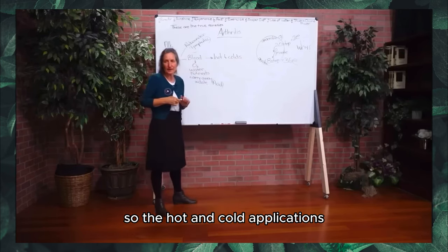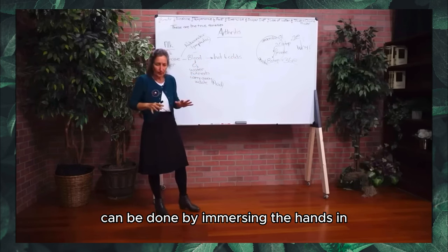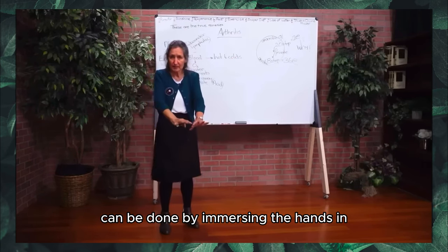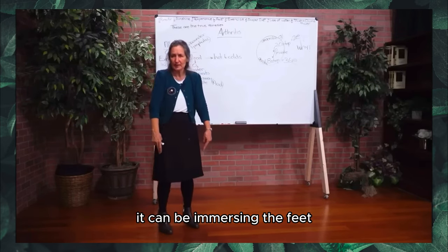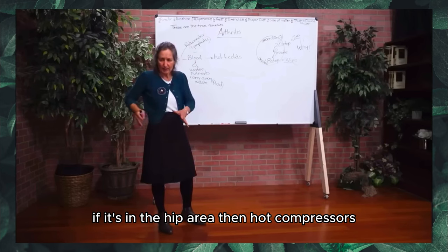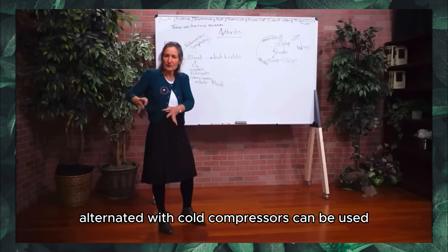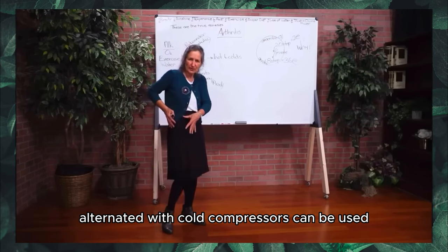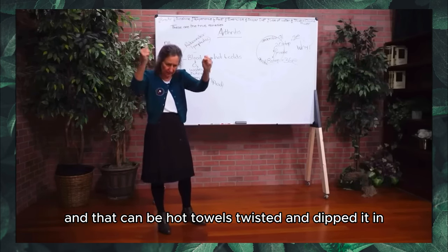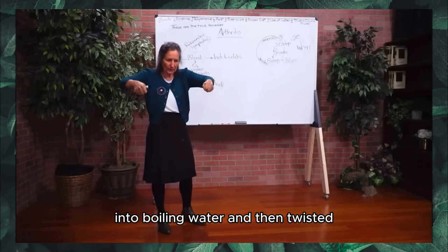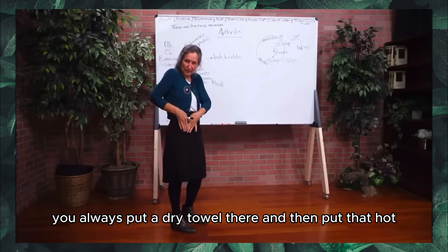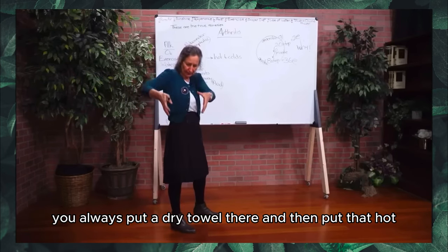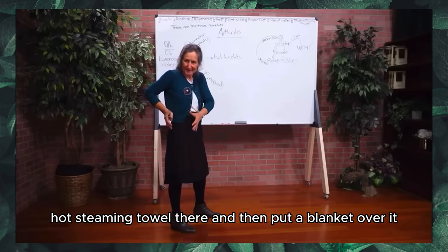Hot and cold applications can be done by immersing the hands or feet in bowls of hot and cold water. If it's in the hip area, hot compresses alternated with cold compresses can be used. Use hot towels dipped in boiling water, wrung out, and folded. Always put a dry towel on the area first, then place the hot steaming towel on top, then put a blanket over it.